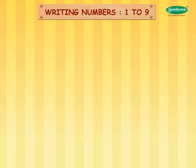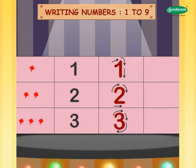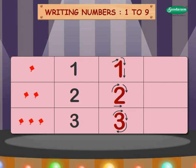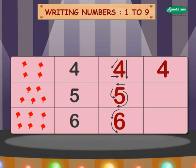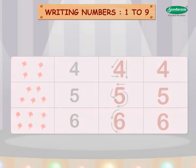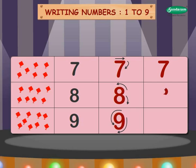Writing numbers one to nine. Children, let us learn how to write the numbers one to nine. One, two, three, four, five, six, seven, eight, nine.